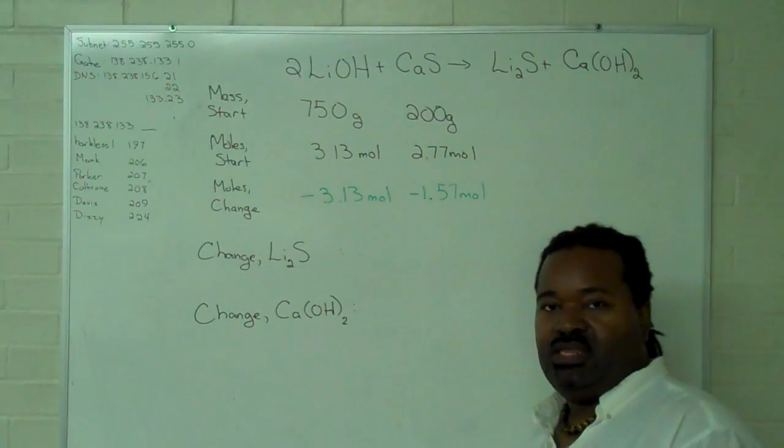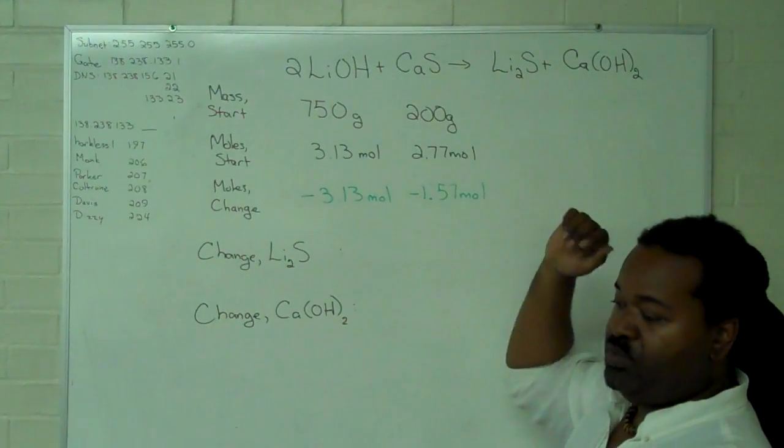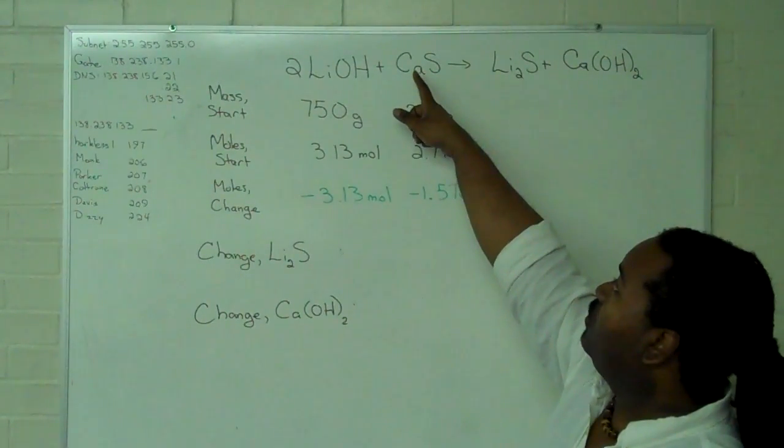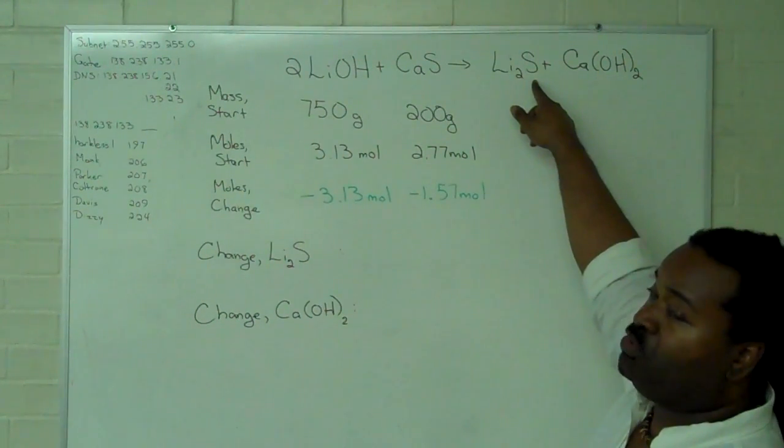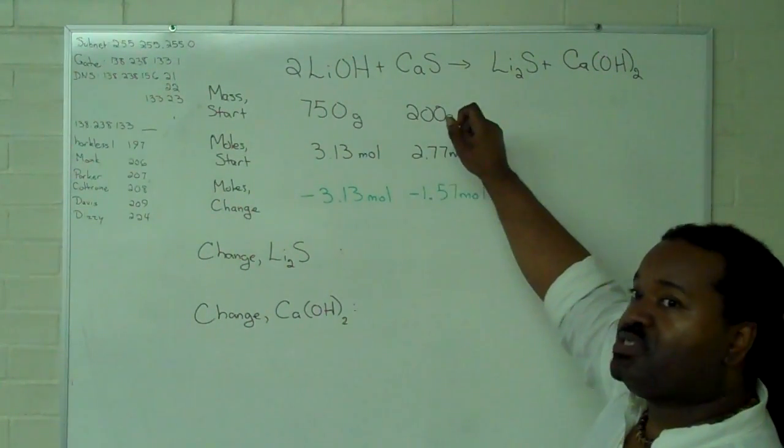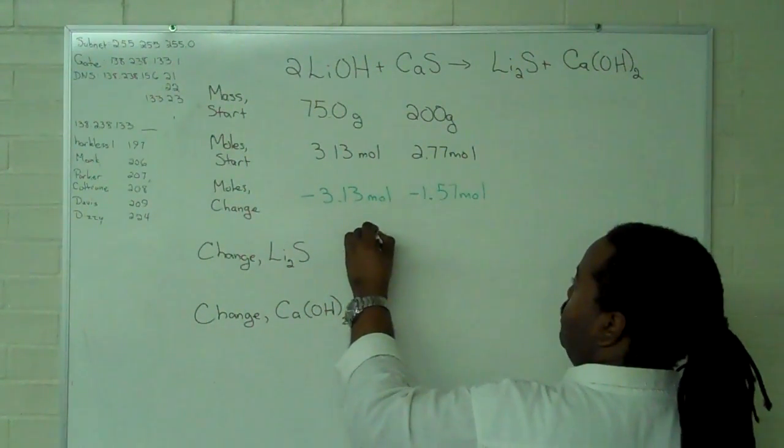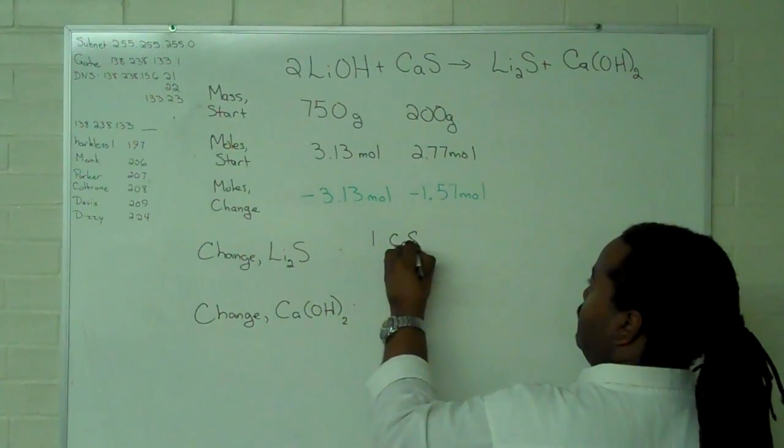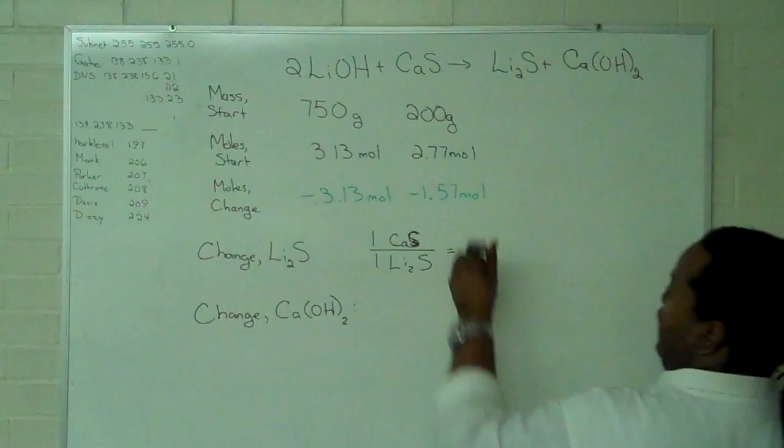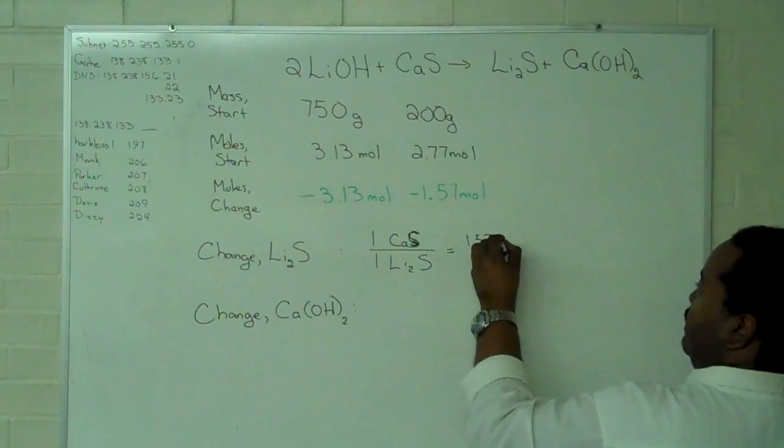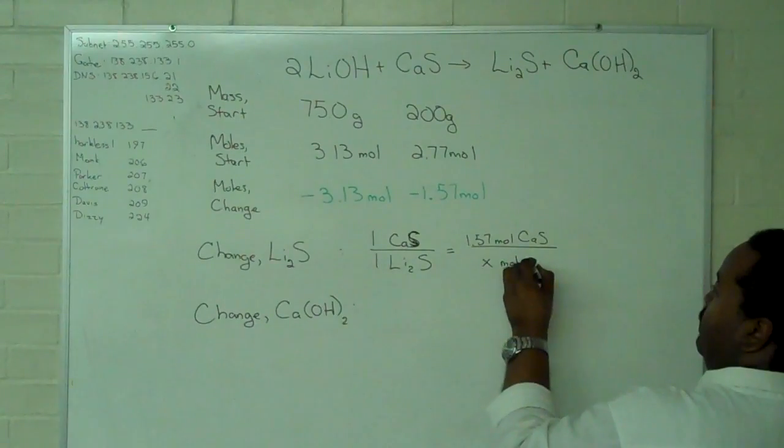And we can use mole ratios. Now, in this case, we have choices on how we want to solve this. I can look at the balanced reaction and recognize that I have a one-to-one ratio. One mole of calcium sulfide will be in a one-to-one ratio with this one mole of lithium sulfide. This one mole of calcium sulfide is also in a one-to-one ratio with this one mole of calcium hydroxide. And so, having all of these ones will make life a lot easier. Because now that I know I'm using 1.57 moles of the calcium sulfide,